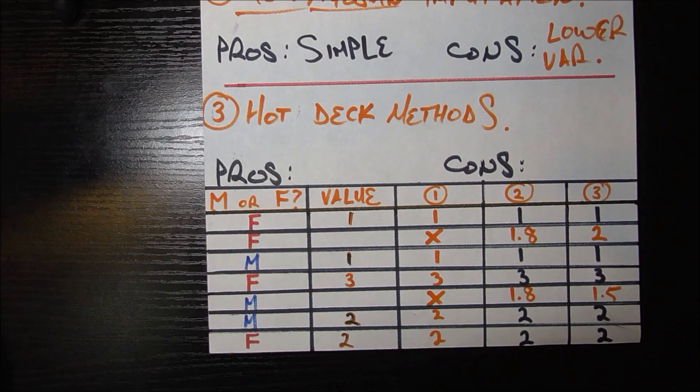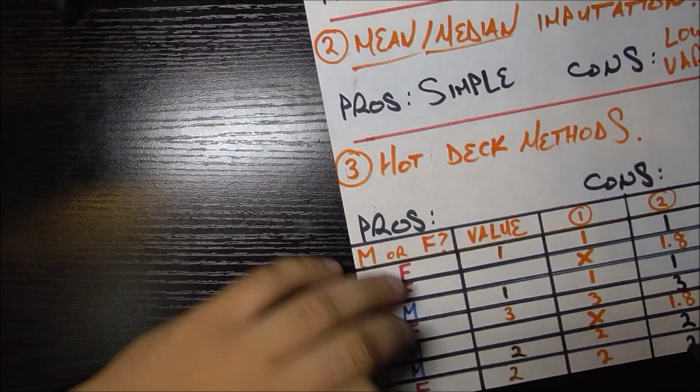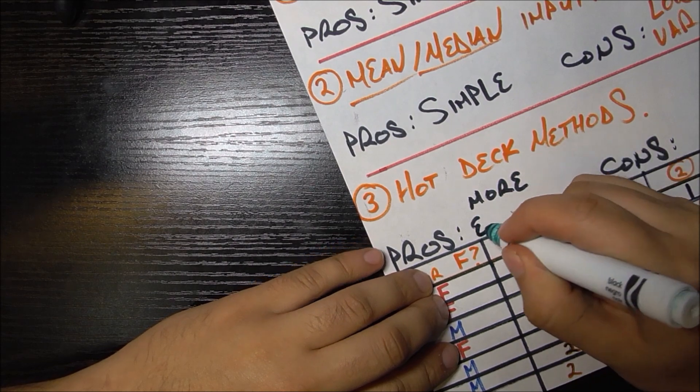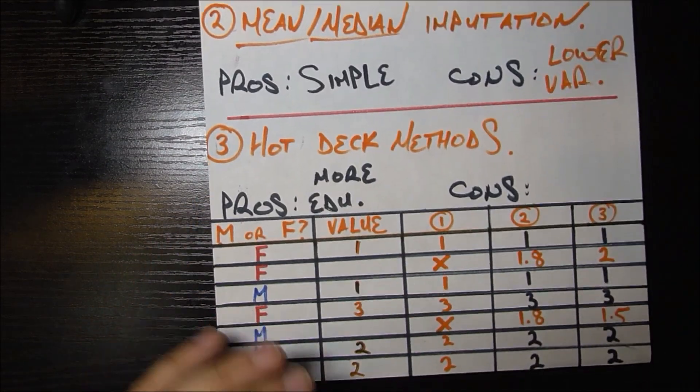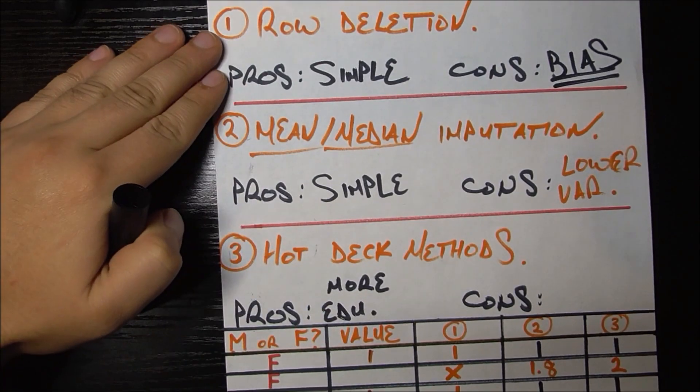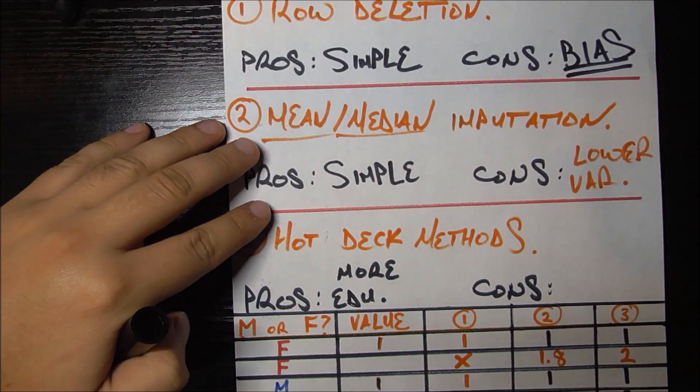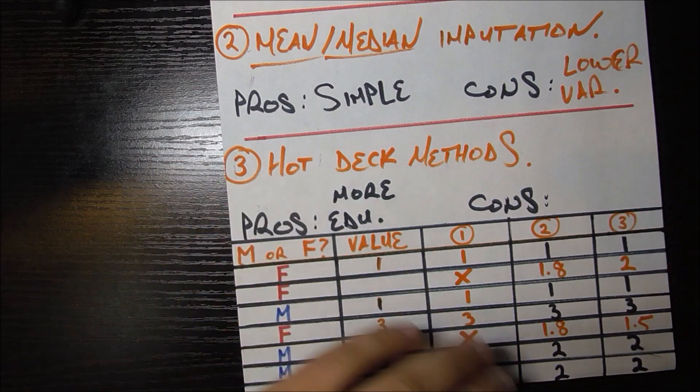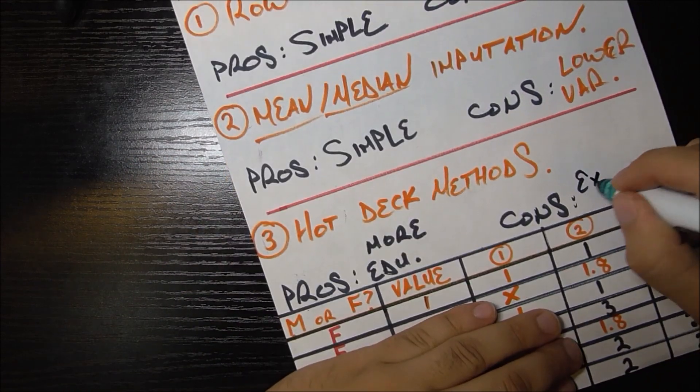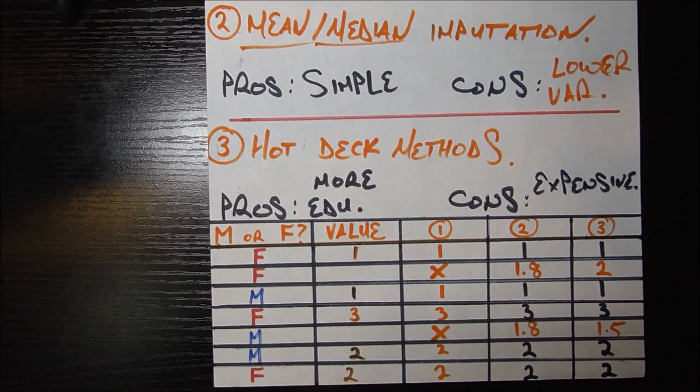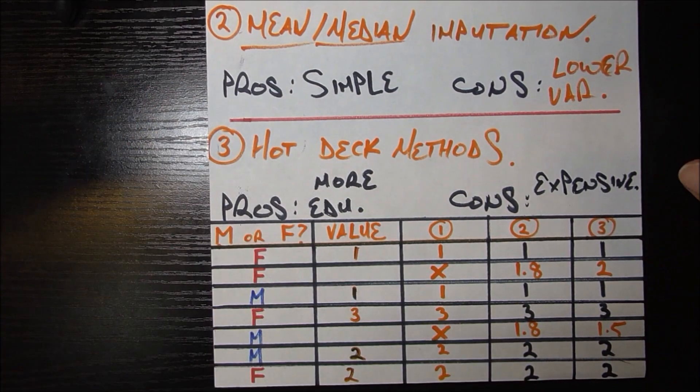So to fill in the pros of the hot deck method, it is more educated because it takes into account a lot more information—so more educated. The cons are that it is possible that it's more computationally expensive. So whereas just deleting data is pretty easy, filling in a mean or a median is pretty easy. For this one we have to actually look through all the data, do some computation, so it can be expensive. And expensive here I mean like computationally, for your computer to go through this whole process when you have tons of missing data.